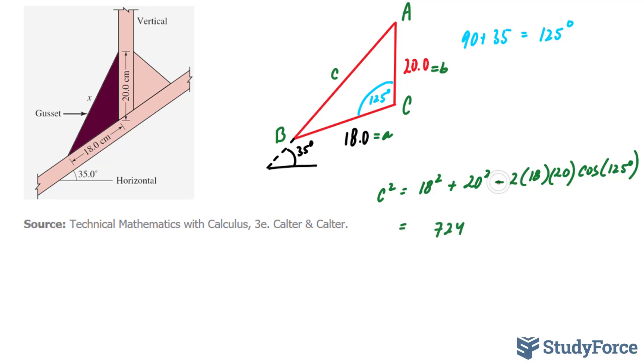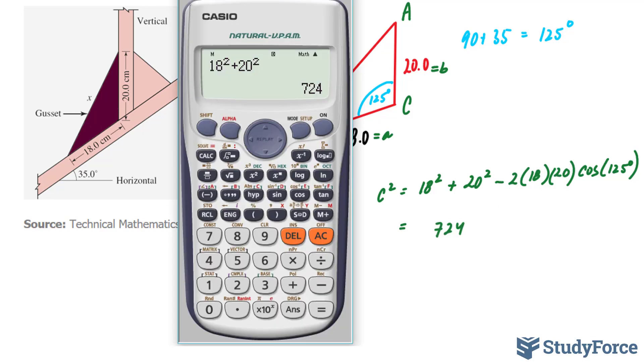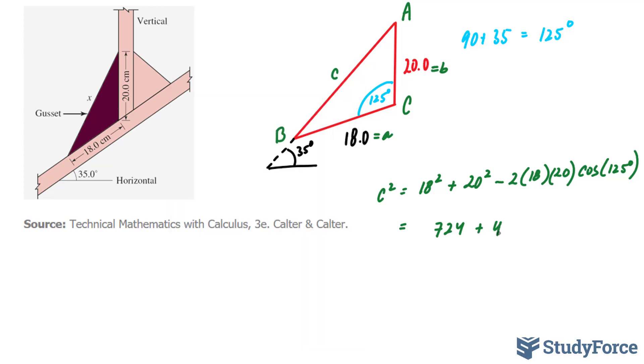Next, we'll evaluate this part, and multiply it to cosine 125. So negative 2 times 18 times 20 times cosine 125. And this gives us positive 412.97.